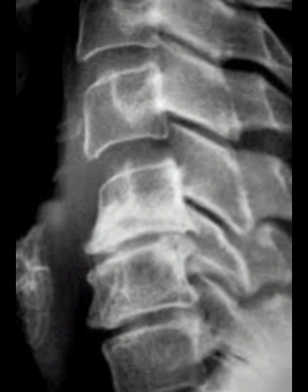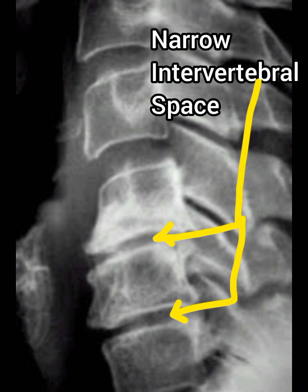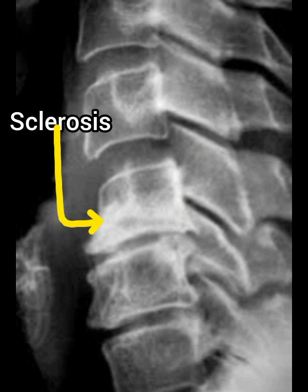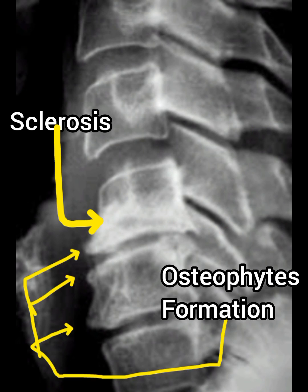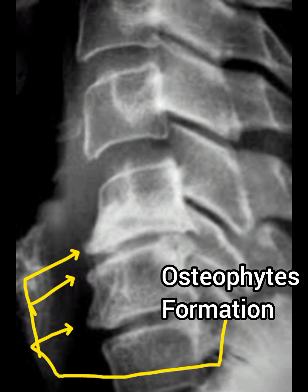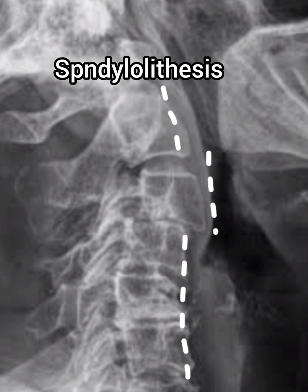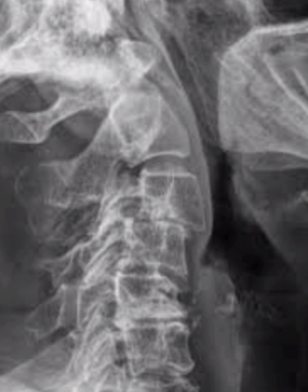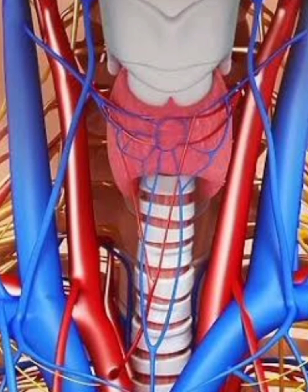Degenerative diseases of the disc and vertebrae may give X-ray findings of narrowing of the intervertebral spaces, skeletal changes of the vertebral bodies, and osteophyte formations, with or without spondylolisthesis or displacement of the vertebrae. This covers the basic knowledge of common fractures and degenerative disorders of the cervical spine.